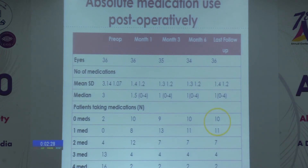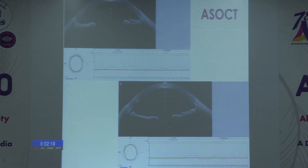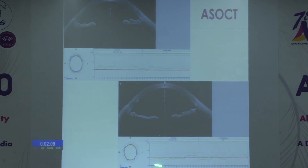Twenty-one eyes required either 0 or 1 medication at follow-up; only 2 eyes required 4 medications, as had been the case pre-operatively. On ASOCT of a representative patient, the anterior chamber was initially shallow with an occludable angle. Post-operatively, the anterior chamber deepened and a cleft was visible in the nasal angle; the ITC index improved from 95% to 35% in this patient.